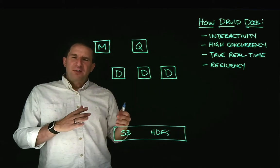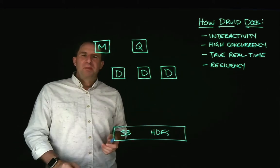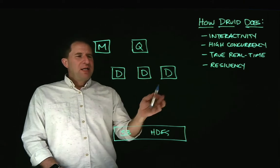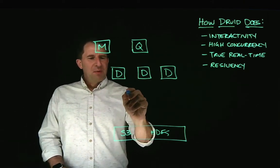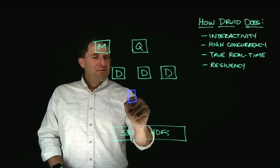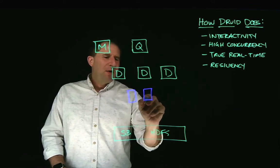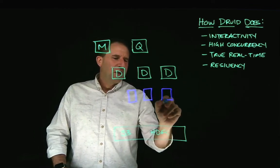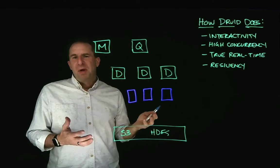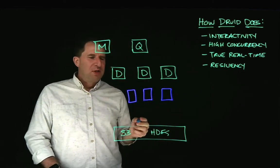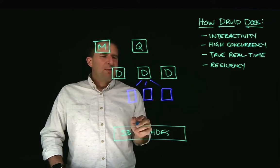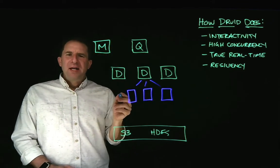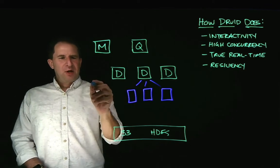Now, data comes in in a very wide, denormalized table, usually keyed by time. And when data comes in, it's stored on the data nodes in segments. And segments are files. Depending upon the data that you have and how well it can be compressed, these could be maybe a couple million rows on each of these segments. And every data segment has the same characteristics in Druid.